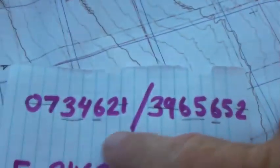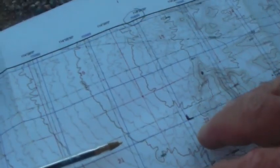We are going to plot this UTM grid coordinate to a map that has a thousand meter grid overlaid on it.